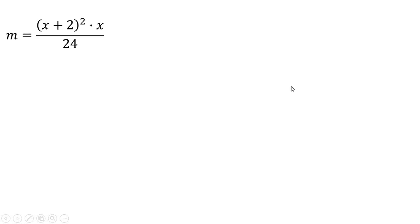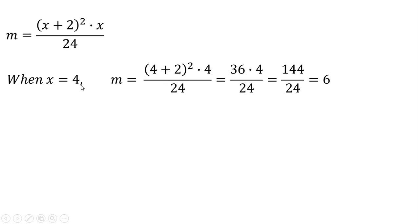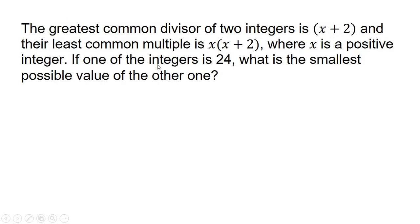When x equals 4: (4 plus 2) is 6, 6 squared is 36, times 4 is 144, and 144 over 24 equals 6. We get an integer! That means M equals 6. So the smallest possible value of the other integer is 6.